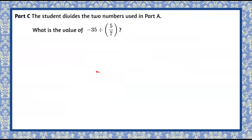Here's part C. The student divides the two numbers used in part A. You're asked: what is the value of negative 35 divided by five-sevenths? Go ahead and pause the video now, divide, and come back and hit play when you're done.